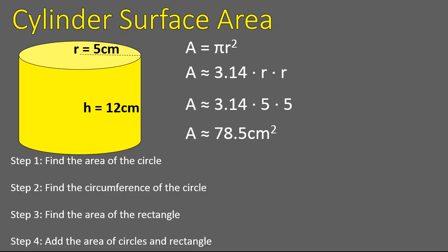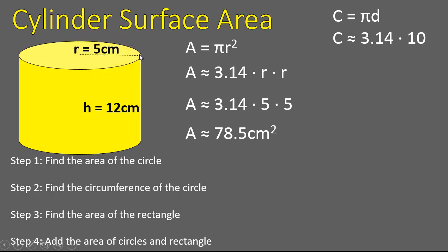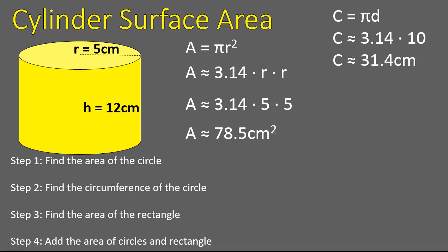Step two: find the circumference of the circle. The circumference is pi times the diameter. A radius goes from the center of the circle to the outside; the diameter is twice that amount — the distance completely across the circle. So to find the circumference, we multiply pi times our diameter. In this case, pi times 10 gives us approximately 31.4 centimeters. That's the circumference.